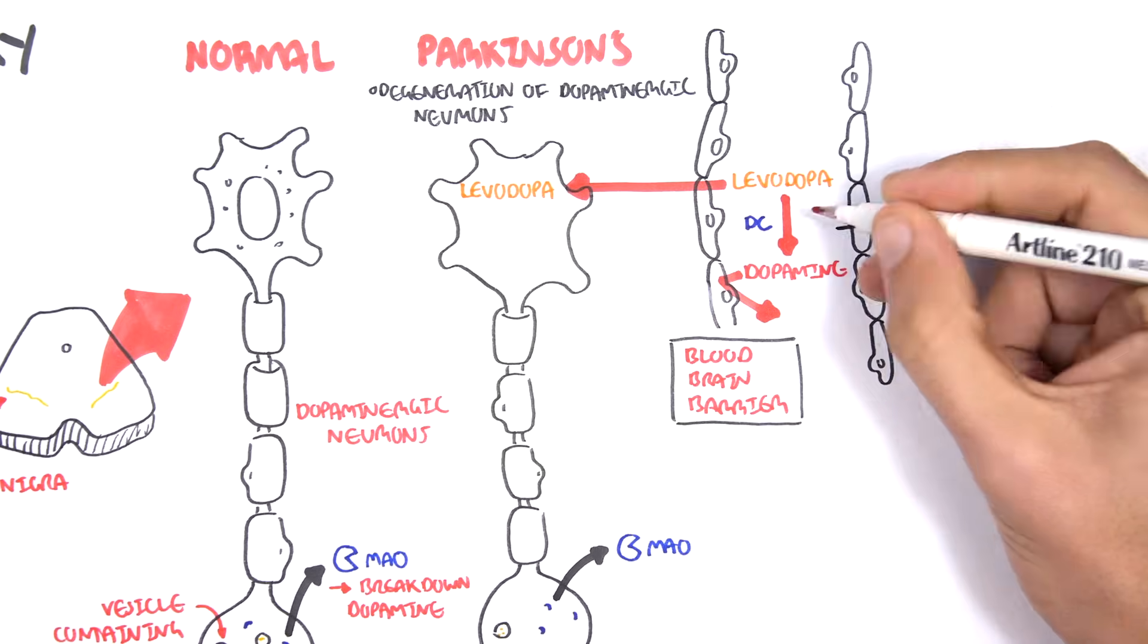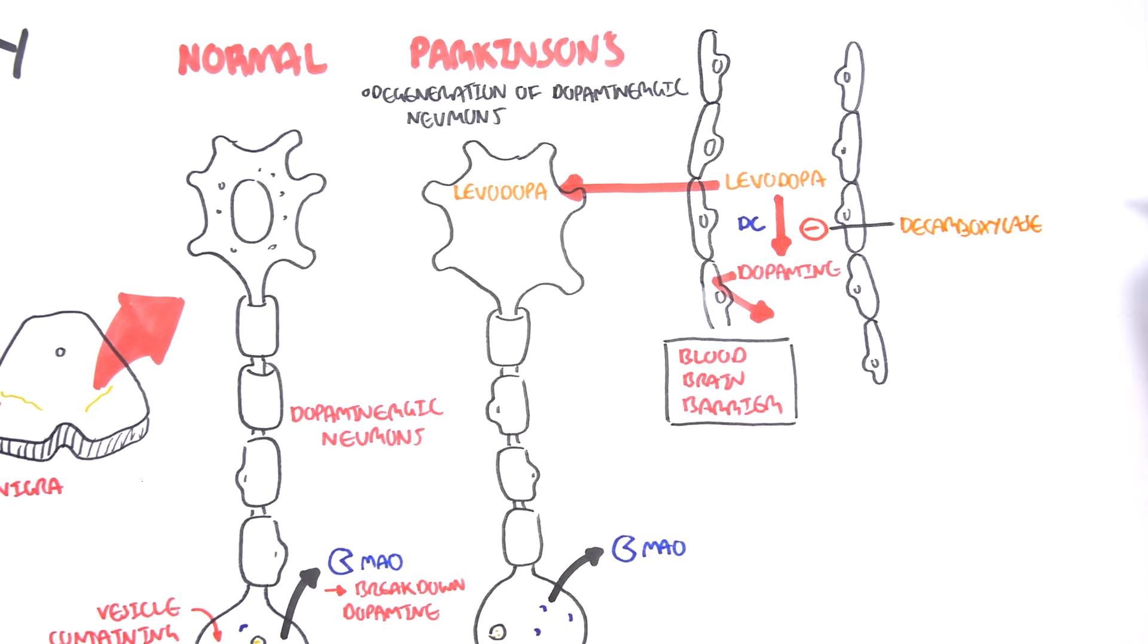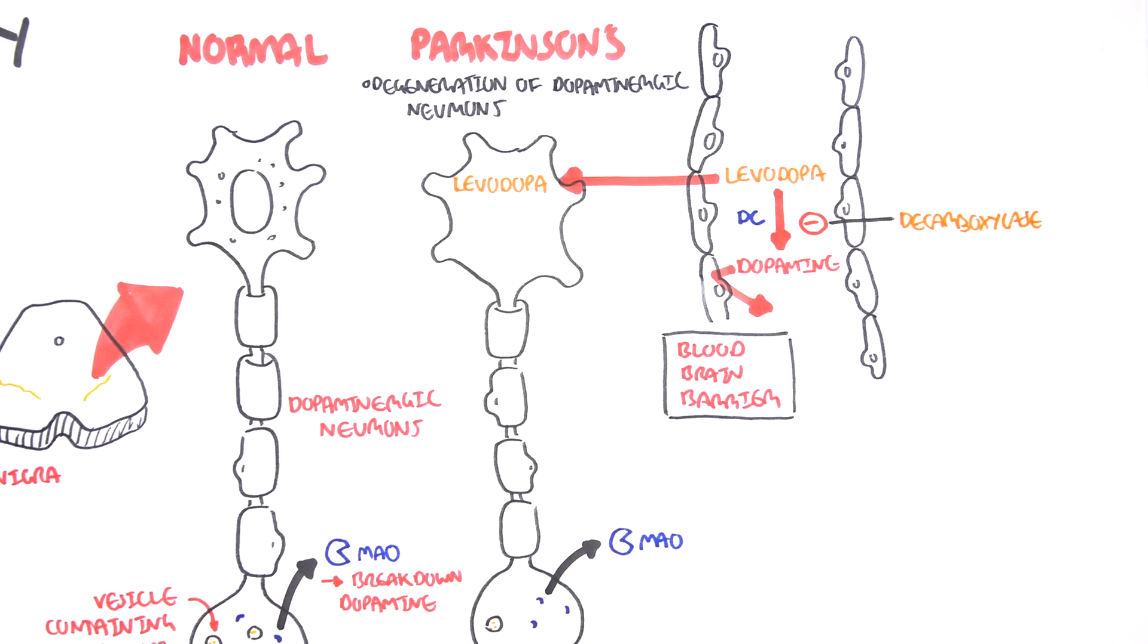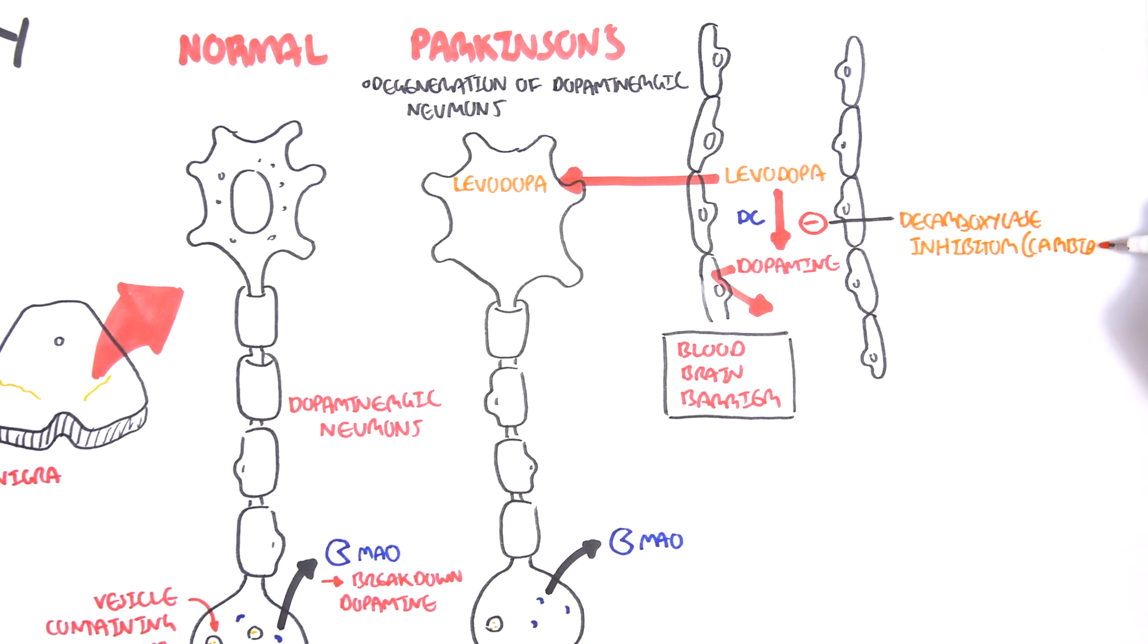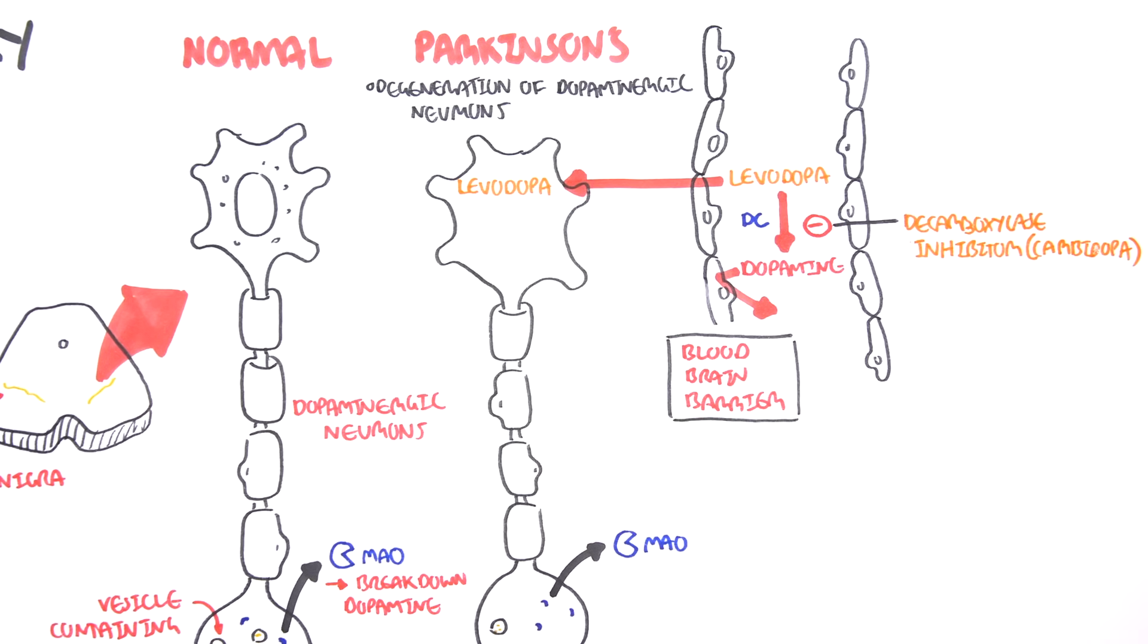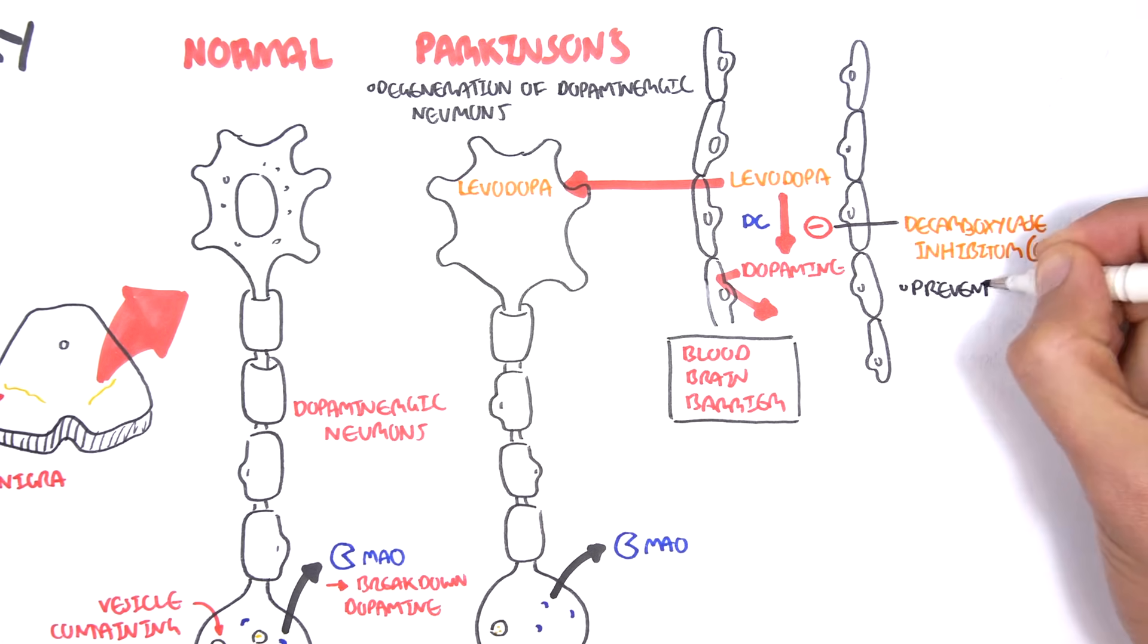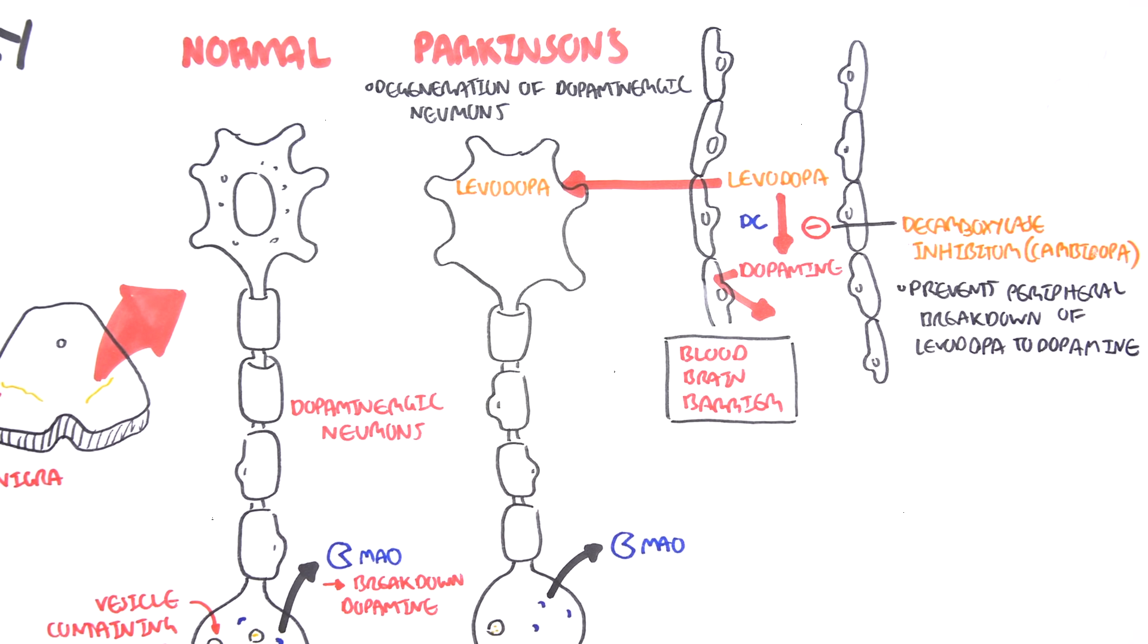Usually, there's another drug which is given in combination with levodopa. These are known as decarboxylase inhibitors. A main example is carbidopa. These prevent the peripheral breakdown of levodopa to dopamine, allowing levodopa to essentially move into the dopaminergic neurons that are left over to produce more dopamine.